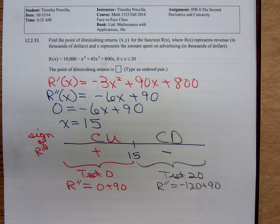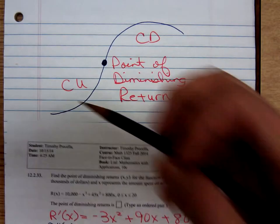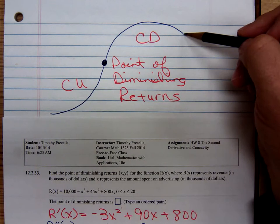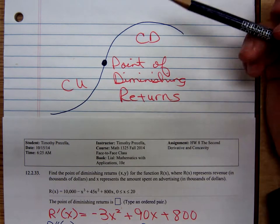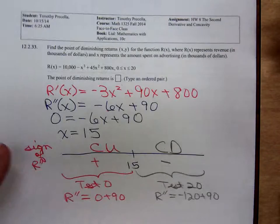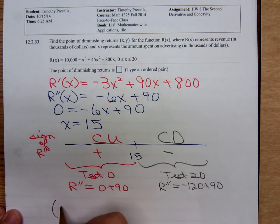Remember, I said the point of diminishing returns occurs if the graph is concave upward to the left of the inflection point and then concave downward to the right of the inflection point. In that situation, we call the inflection point the point of diminishing returns.